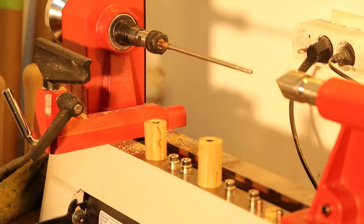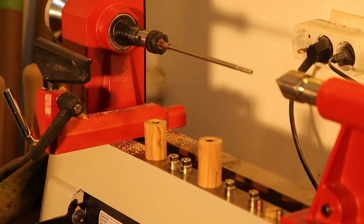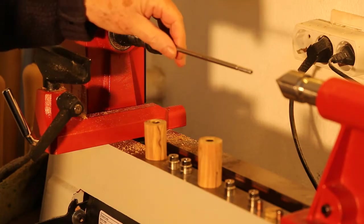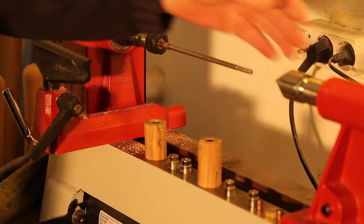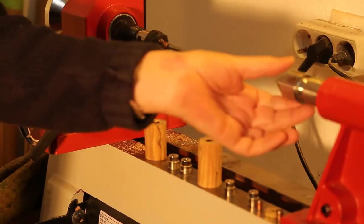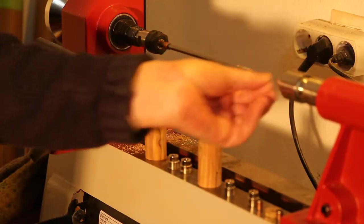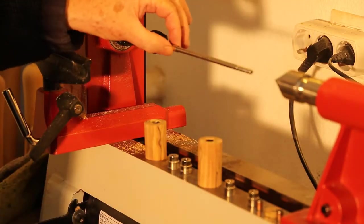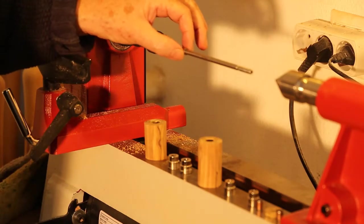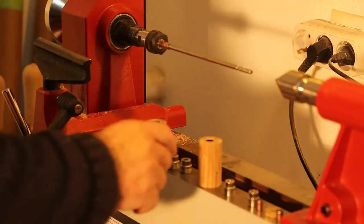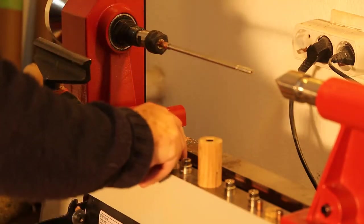For this next stage, you need to change the setup on the lathe. This piece is called the pen mandrel. You put the tailstock back in, and on the pen mandrel, you have little spacers.